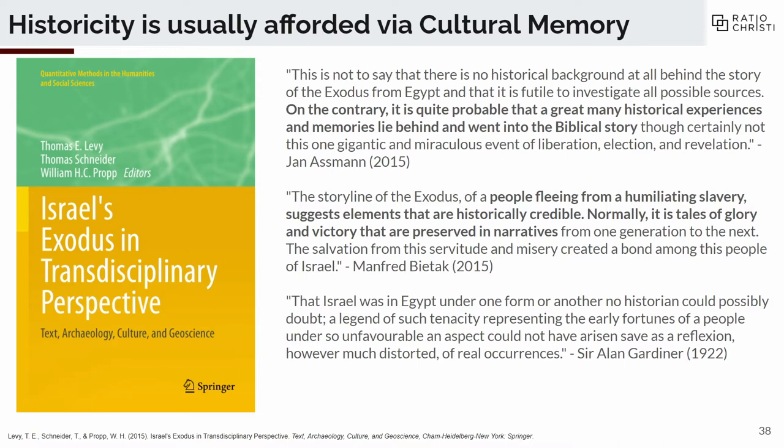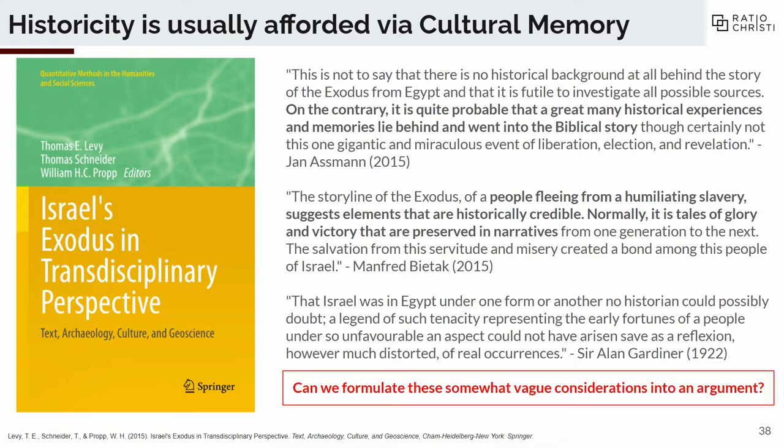Sir Alan Gardiner, who actually said Genesis was purely mythological and all claims of history in the Bible are equally purely mythological, had this to say about the Exodus: 'That Israel was in Egypt under one form or another, no historian could possibly doubt. A legend of such tenacity representing the early fortunes of a people under so unfavorable an aspect could not have arisen, save as a reflection, however distorted, of real occurrences.' These people are basically saying this story doesn't seem like it could be preserved unless it was actually based on something that happened in real life.